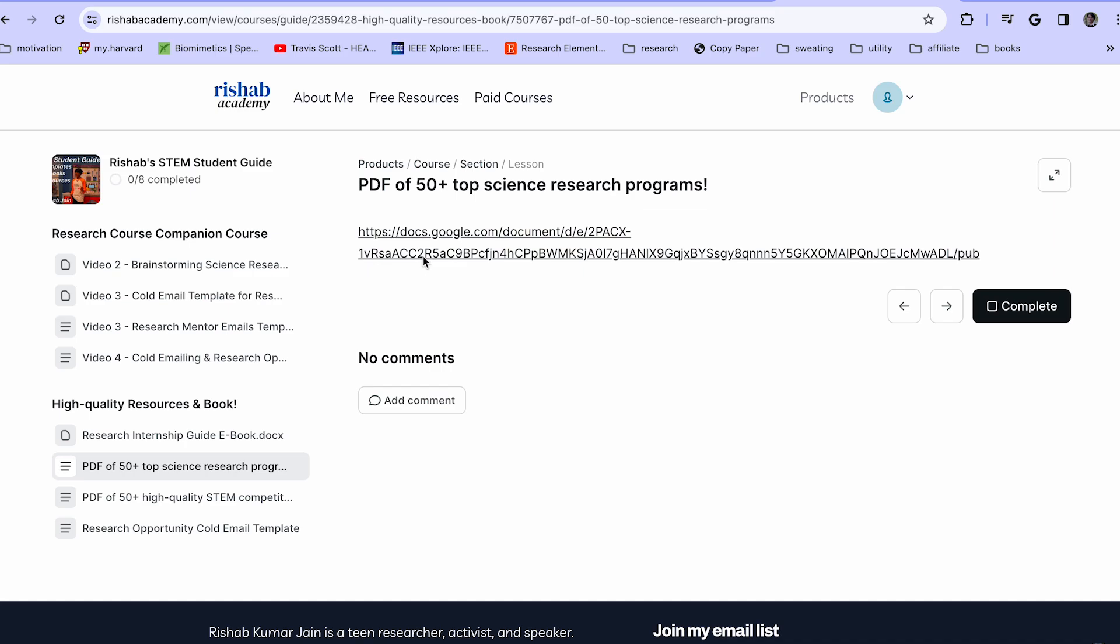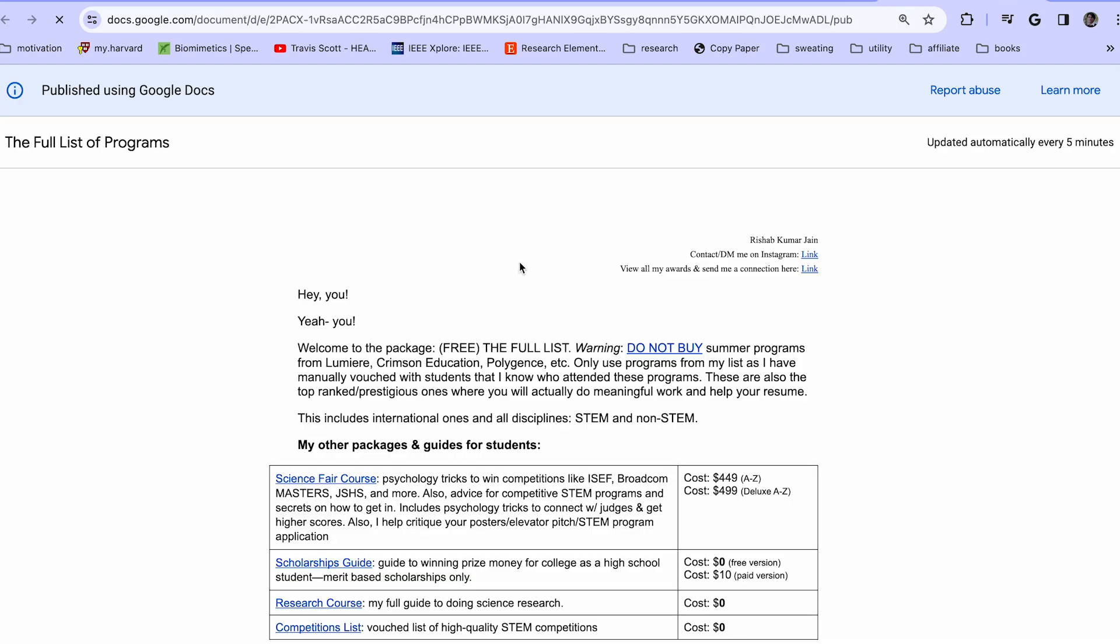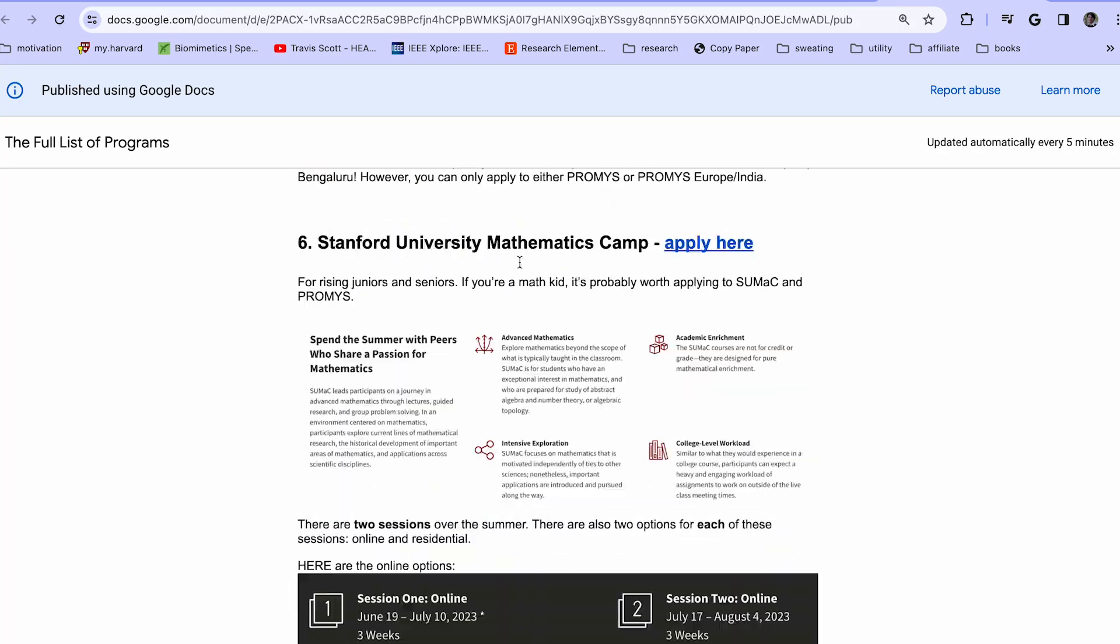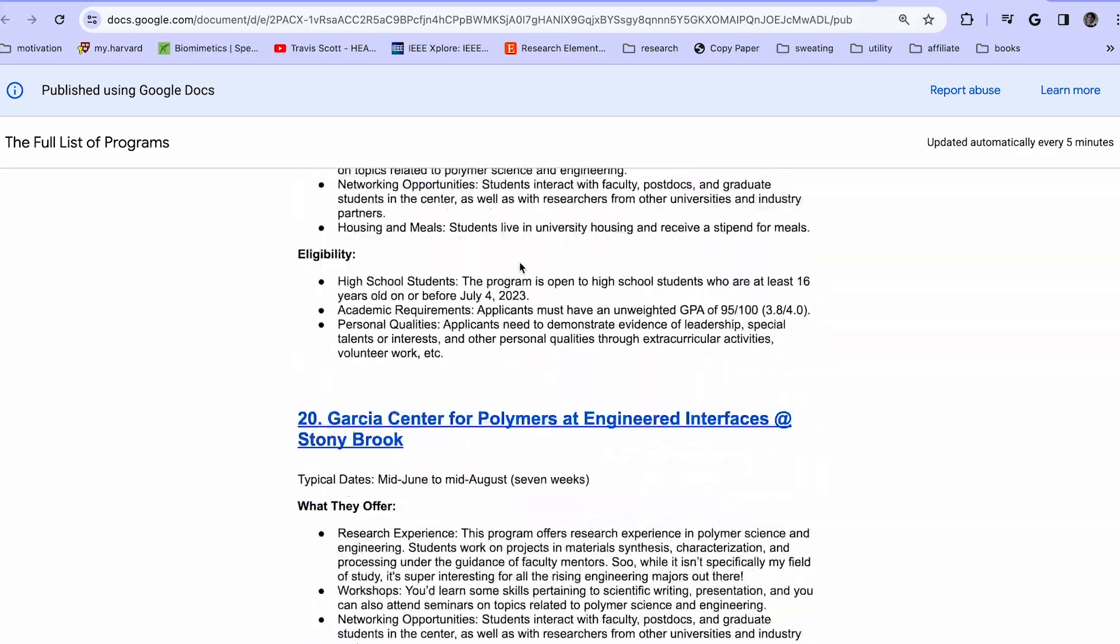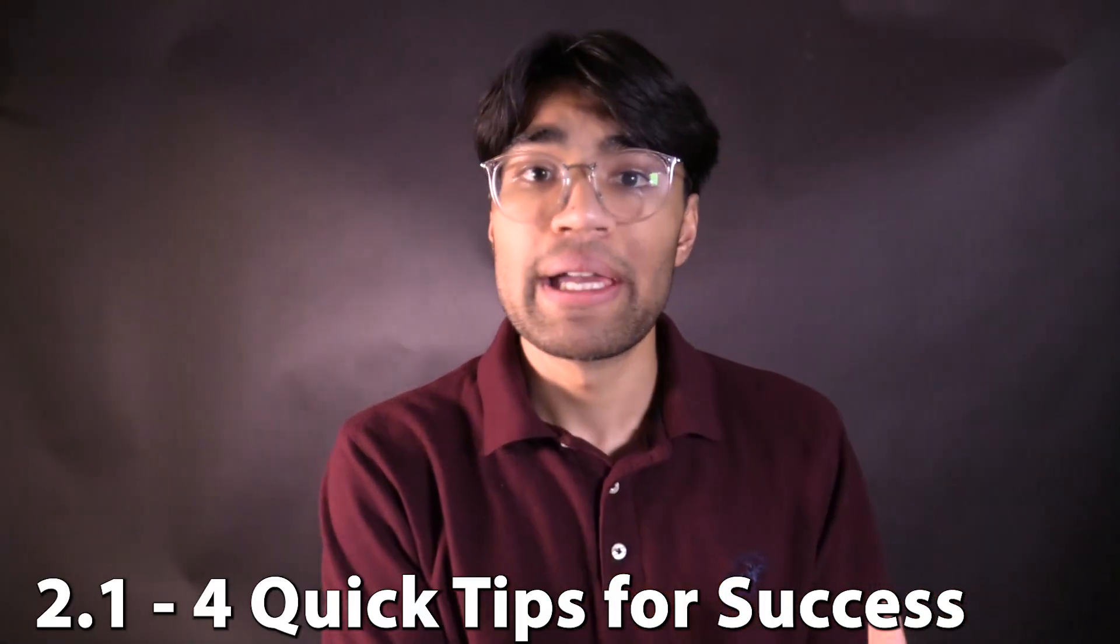In this guide, I've also listed their requirements and given you extra advice on how to apply. But speaking of advice, this is part two. How do you actually get into these programs? How can you get an edge over other applicants so that you're accepted? Here are four main things that you need to keep in mind when applying to these programs.